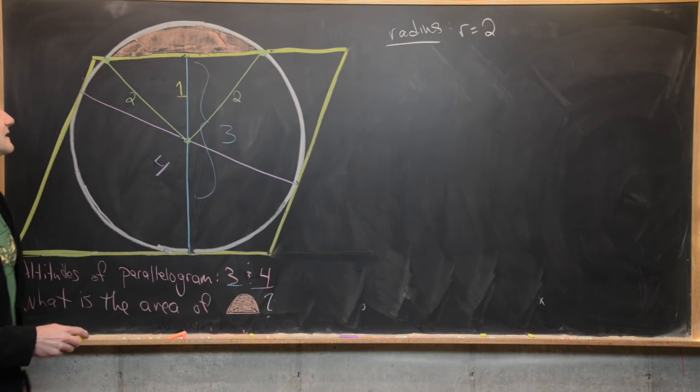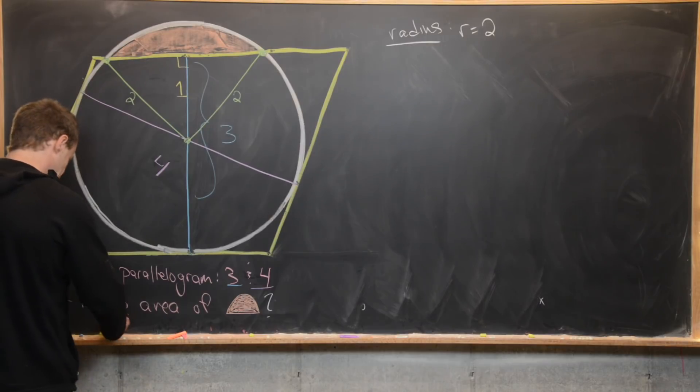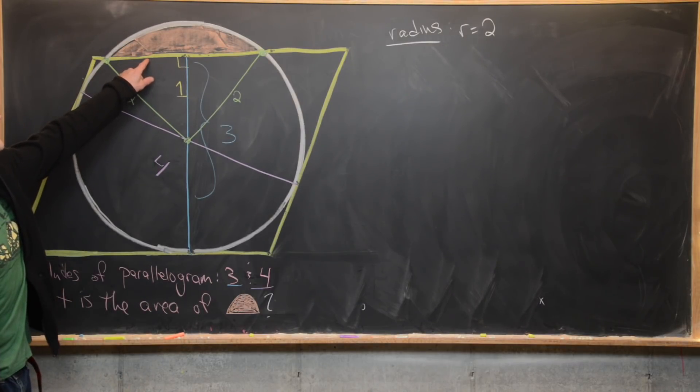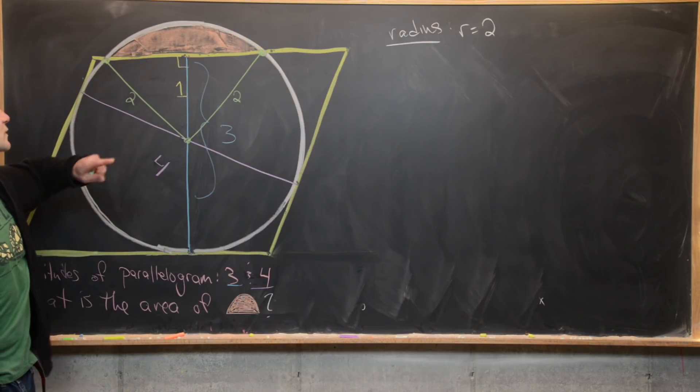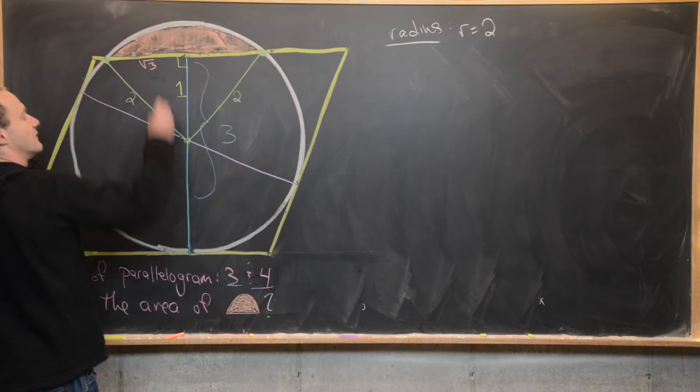And then we might as well complete this. So this makes a right triangle up here. We can complete the right triangle with the Pythagorean theorem, and we'll see that the length of this line segment will be the square root of two squared minus one squared. So that'll be the square root of three.